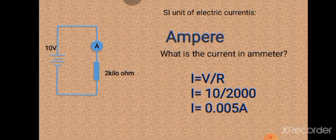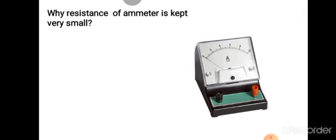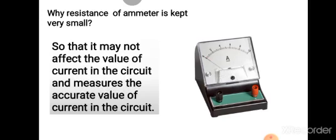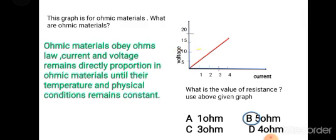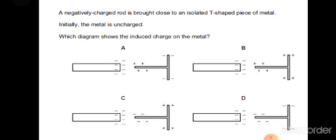Why is the resistance of an ammeter kept very small? The resistance of the ammeter is kept very small so that it can measure the accurate value of current. The voltage with corresponding current gives you the resistance, that constant value is 5 ohms — 10 divided by 2 equals 5 ohms.